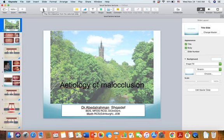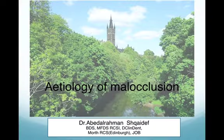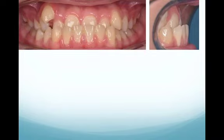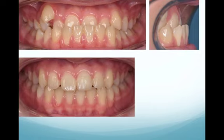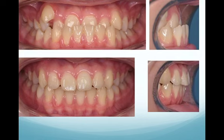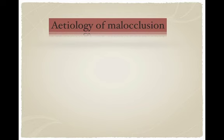Today's lecture is about the etiology of malocclusion, and it's going to be in two parts — this is the first part. As we know, malocclusion affects most of the population. For example, this patient has a Class 3 malocclusion and we treat her to achieve a Class 1 normal relationship. In order to correct malocclusion, we need to understand its etiology to deliver the best treatment.